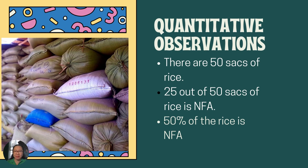Another example. Look at the picture again. We can make quantitative observations like: there are 50 sacks of rice; 25 out of 50 sacks of rice is NFA; 50% of the rice is NFA. All of these statements have quantitative data — numbers like 50, 25 out of 50, and 50 percent — that's why they are quantitative observations.